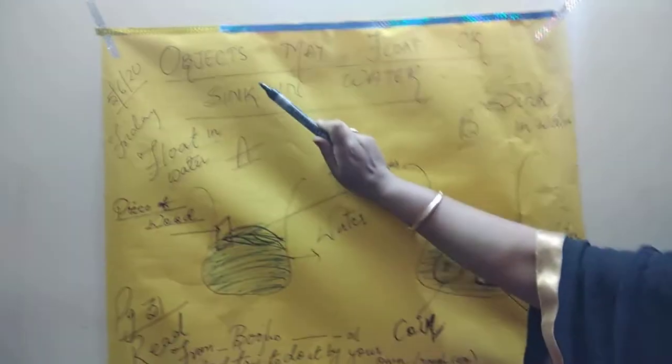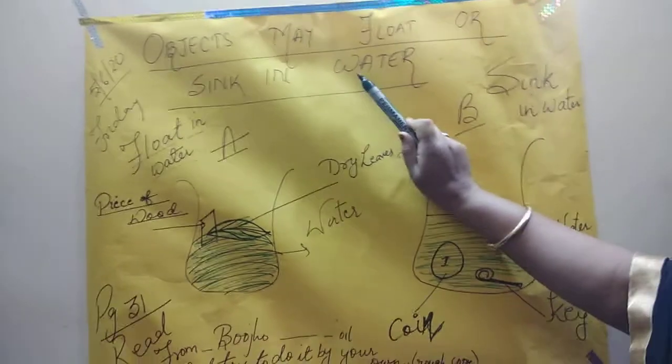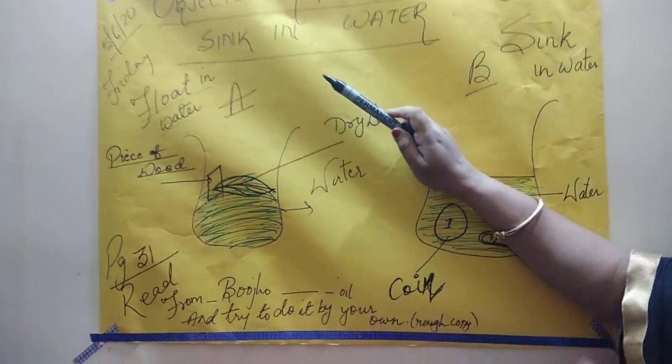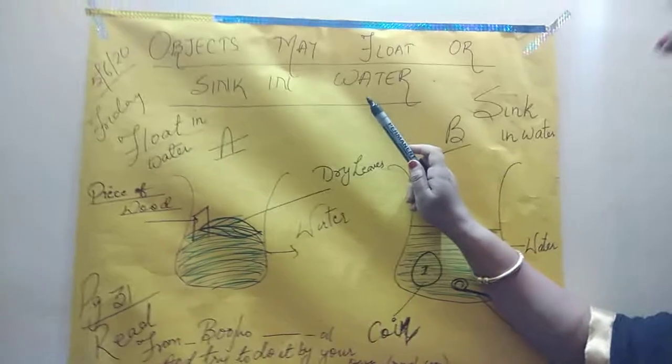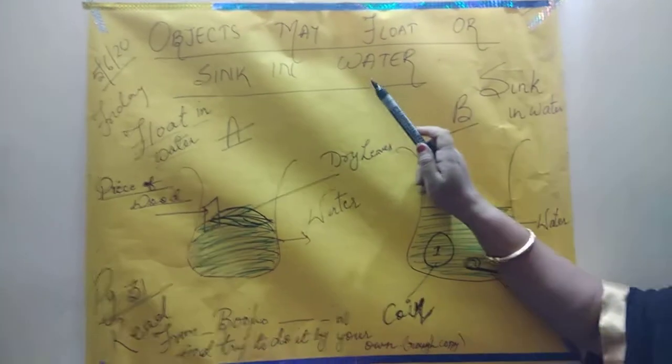The objects which are heavier than water they sink in water. Sink means doob jana. When the objects are heavier than water they just go deep inside the water.